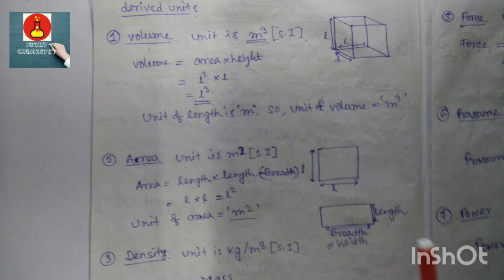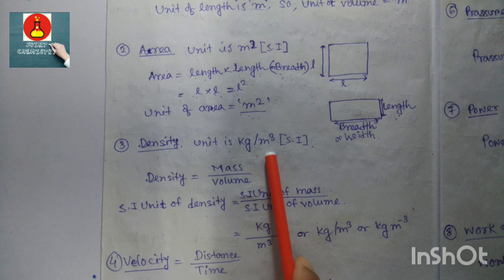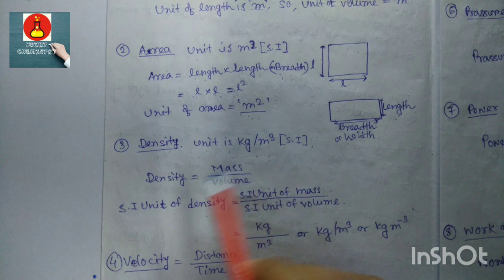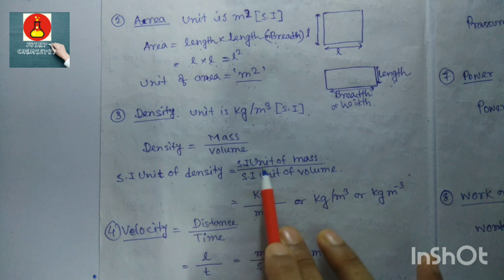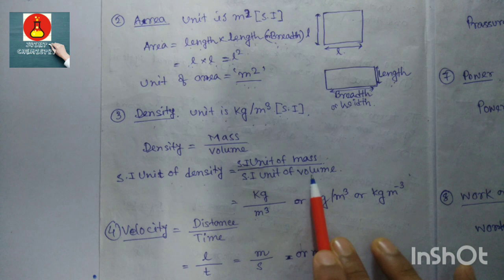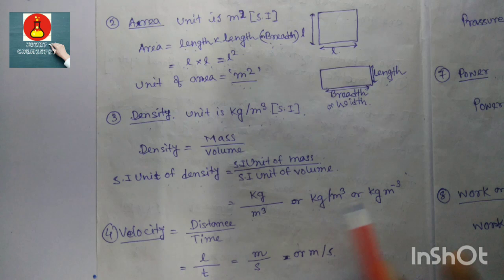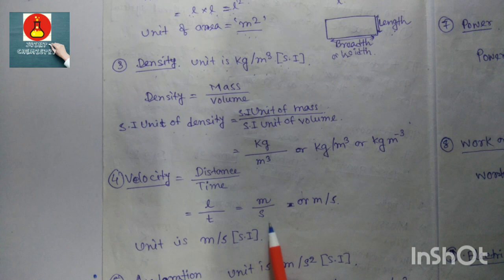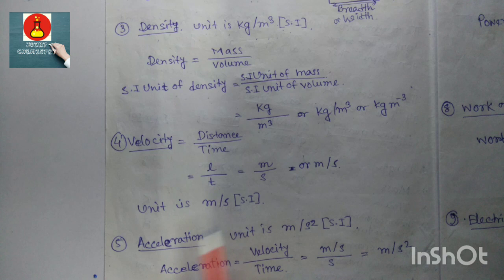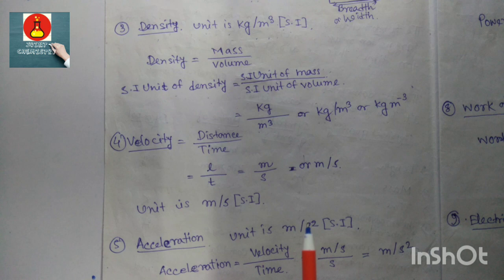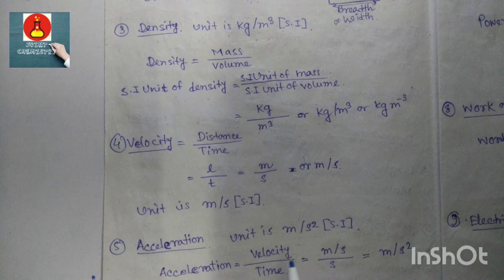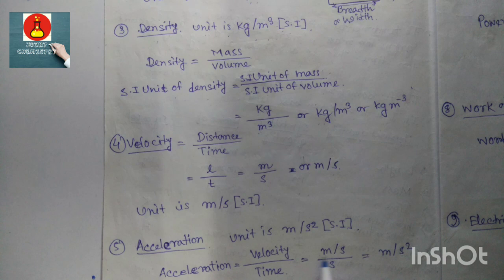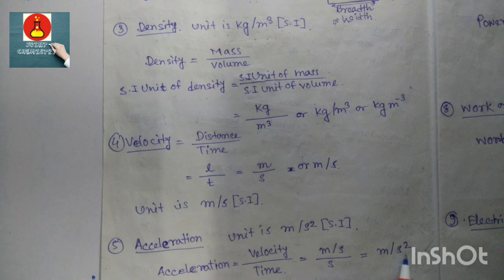Density: the SI unit is kg per meter cubed. Density equals mass divided by volume, so mass in kg divided by volume in m³ gives kg/m³. Velocity: the SI unit is meter per second, since velocity equals distance divided by time — distance is length L and time is t, giving m/s. Acceleration: the SI unit is meter per second squared. Acceleration equals velocity divided by time, so (m/s)/s equals m/s².